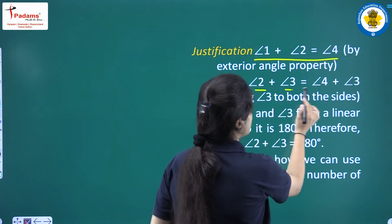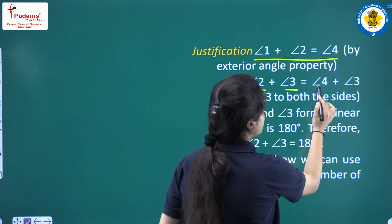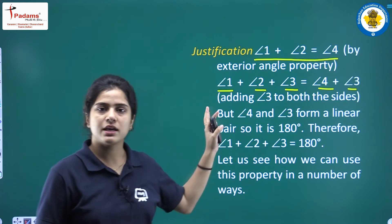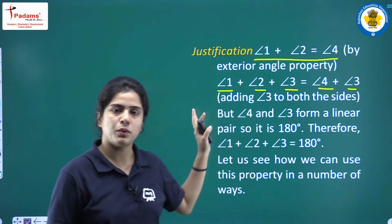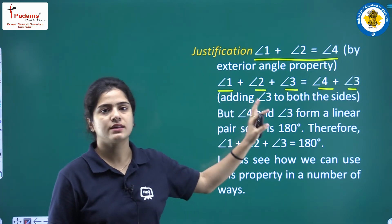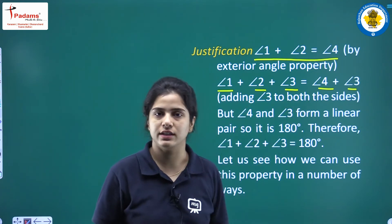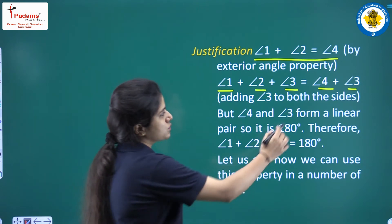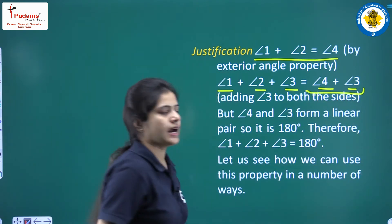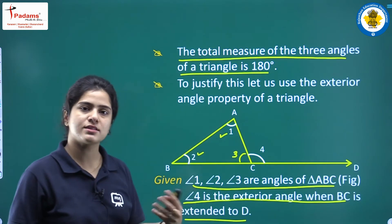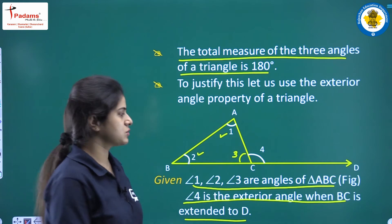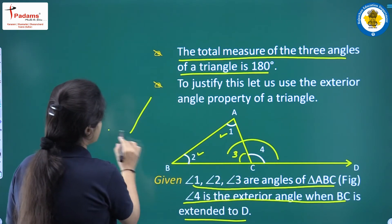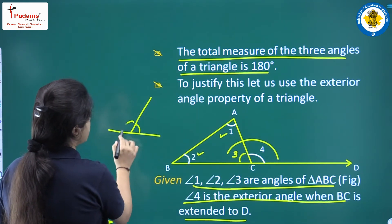So angle 1 plus angle 2 plus angle 3 equals angle 4 plus angle 3. Now, have a look at what angle 4 plus angle 3 represents — these two angles together form a linear pair.